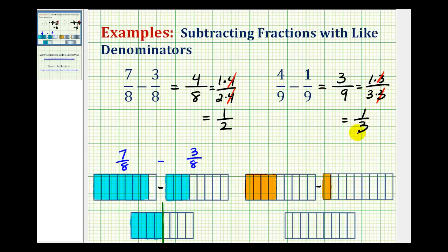Again, if we take a look at the model for this subtraction problem, this would be the model for 4 ninths. This would be the model for 1 ninth. And again, because the denominator is the same, these pieces are the same size. 4 pieces minus 1 piece would leave us 3 pieces, where each piece represents 1 ninth.